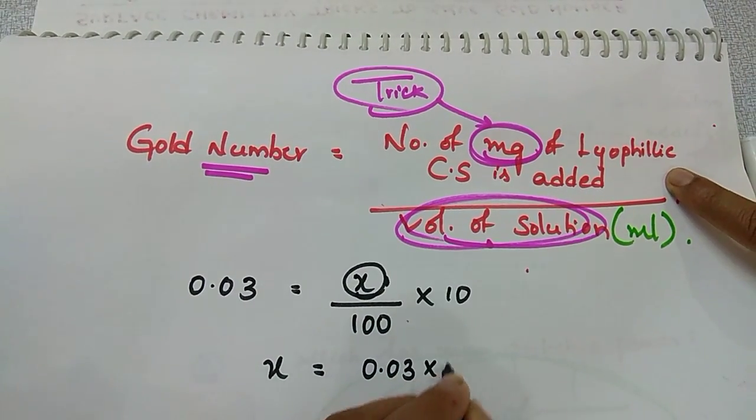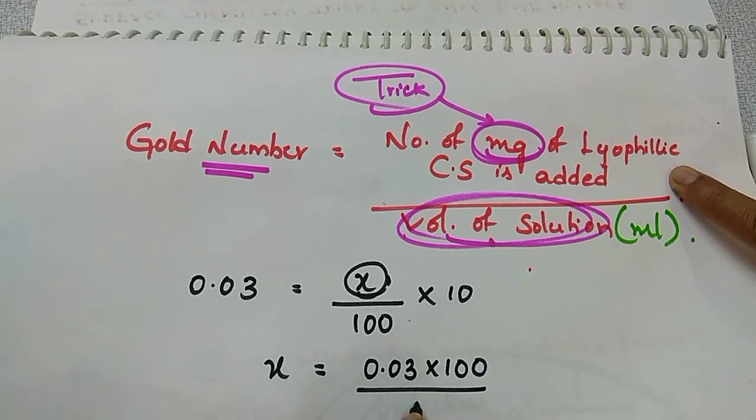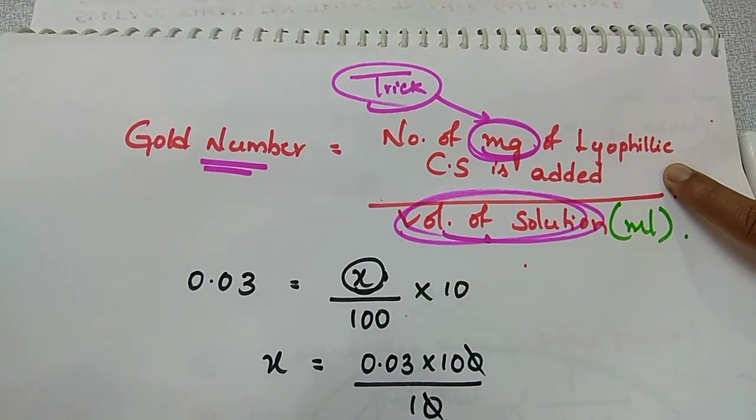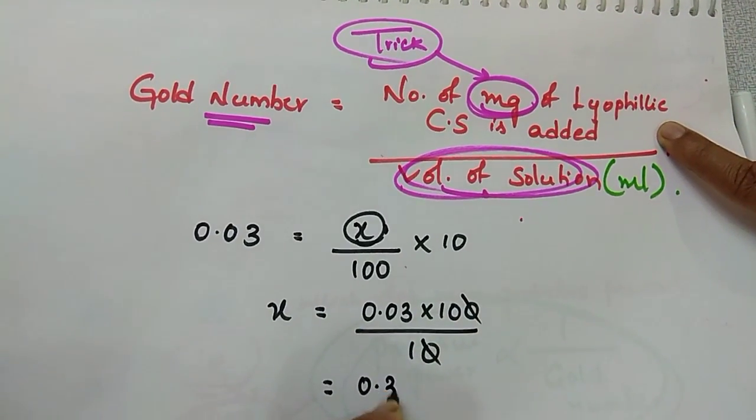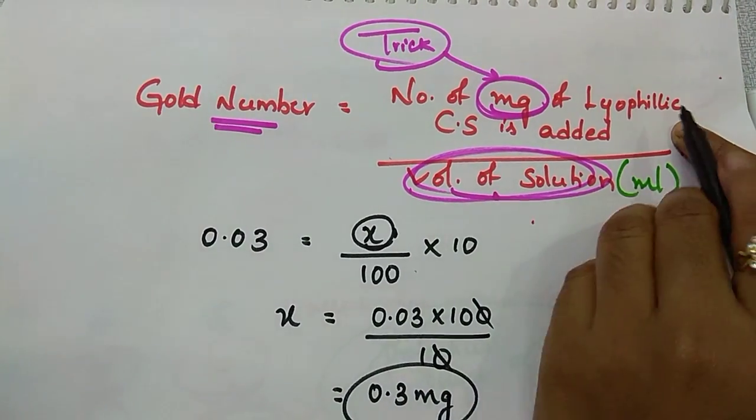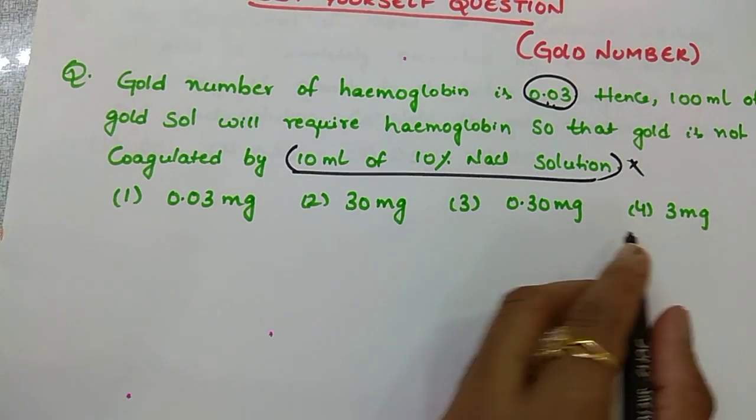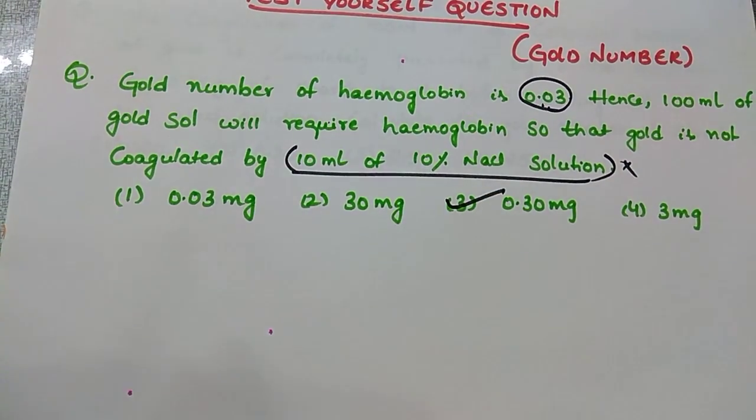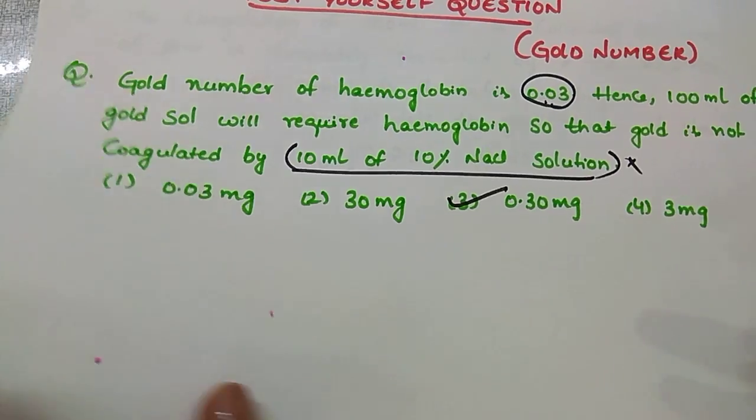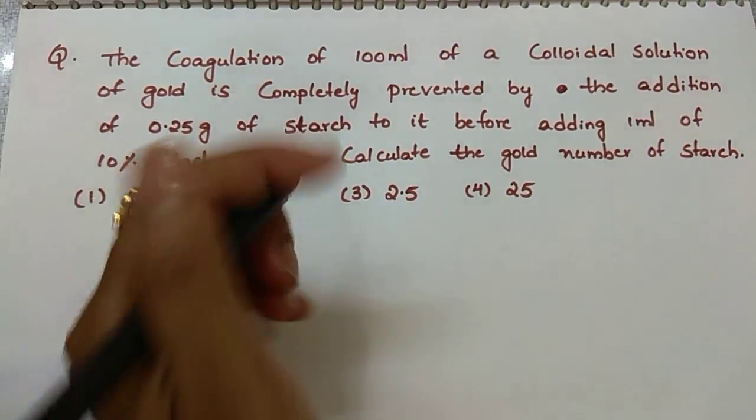So how many milligrams of lyophilic colloid do we want? 0.03 into 100 divided by 10, then we'll get 0.3 milligram of lyophilic colloidal solution is required. What is our answer? 0.3. Clear. Next question.